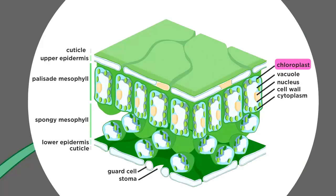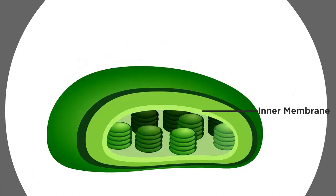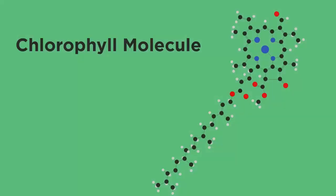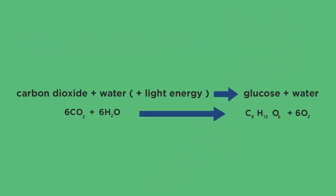Photosynthesis happens in leaf cells. They contain tiny organelles called chloroplasts, which contain a green substance called chlorophyll. Chlorophyll molecules sit on the surface of the chloroplasts and capture light energy from the sun, which is fundamental for photosynthesis.